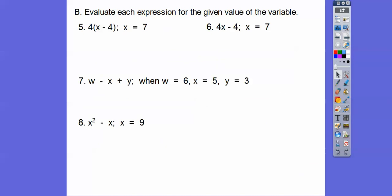The next one is asking us to plug in x equals 7. So we're going to do order of operations. 4(x - 4) when x equals 7. Order of operations says we have to do parentheses first. So 7 minus 4 is 3, and 4 parentheses 3 means 4 times 3, so we multiply and get 12.